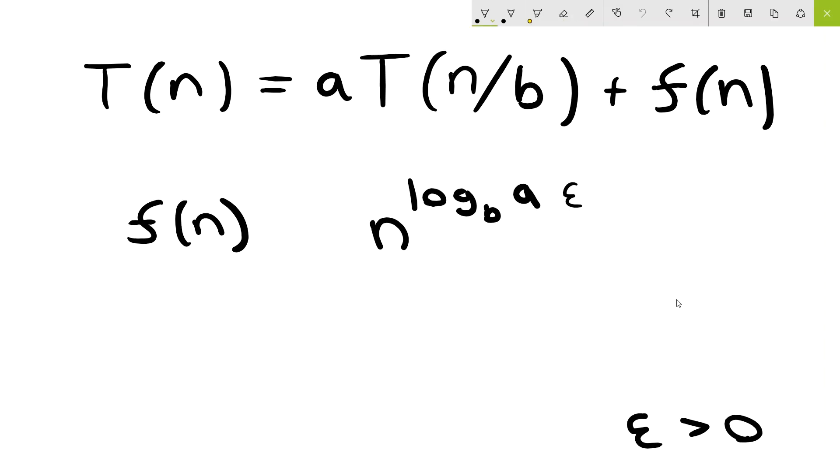Next we'll go over case number two. This is the case where f of n is tightly bounded by n log base b of a. And we actually can drop the epsilon term for this. And there's one additional factor we have to consider in case two.